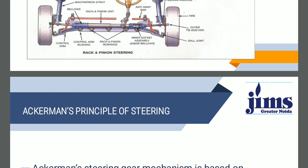The Davis steering mechanism has sliding pairs, which means no friction and easy bearing. This mechanism fulfills the fundamental equation of correct steering in all directions. However, due to the sliding pairs, it becomes inaccurate after some time. That's why the Ackerman steering comes into picture. The Ackerman steering mechanism has only turning pairs, whereas the Davis steering mechanism has sliding pairs.